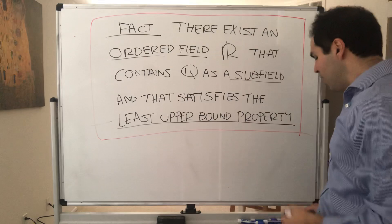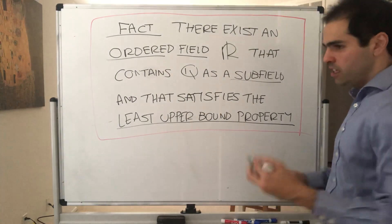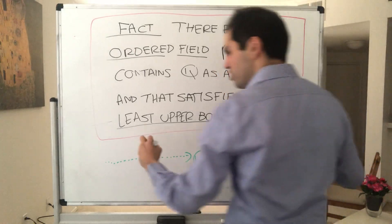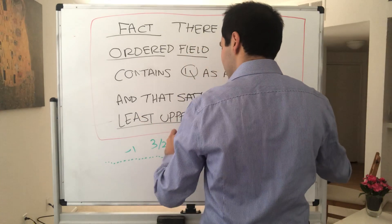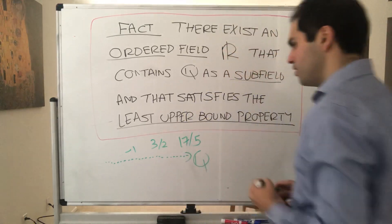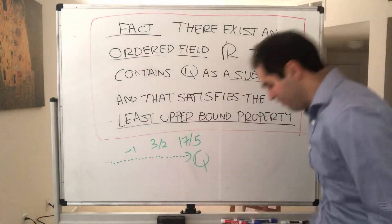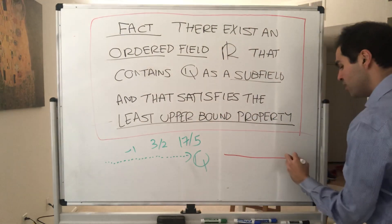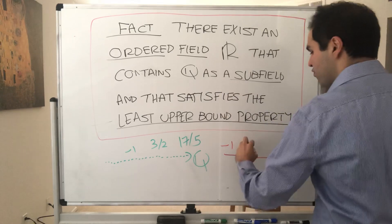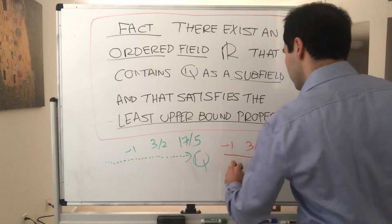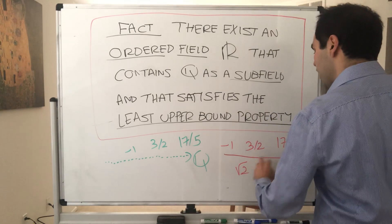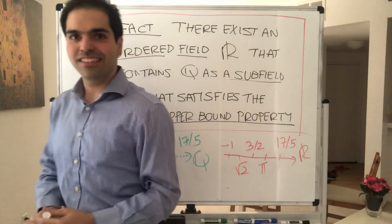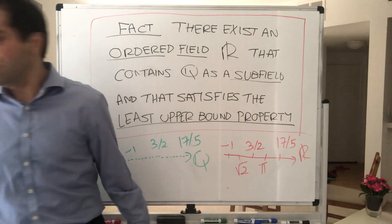Heuristically, all this means is that the rational numbers, even though they are an ordered field, have gaps. You can picture the rationals as having numbers like minus one, three halves, seventeen fifths — but they skip numbers like square root of two or pi. The real numbers have no gaps — they're a continuum. They contain the rational numbers but also square root of two, pi, and other numbers. There are no holes in the real numbers, and that's why we like them in analysis, where we want things to be in one piece.